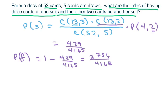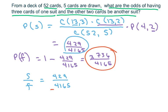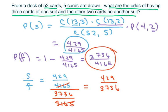And that's going to give you 3736 over 4165. So our odds is success over failure, which is 429 over 4165. That's your success. And your failure, probability of failure is 3736 over 4165. These two cancel. And so you're going to get 429 over 3736. And that's your answer.